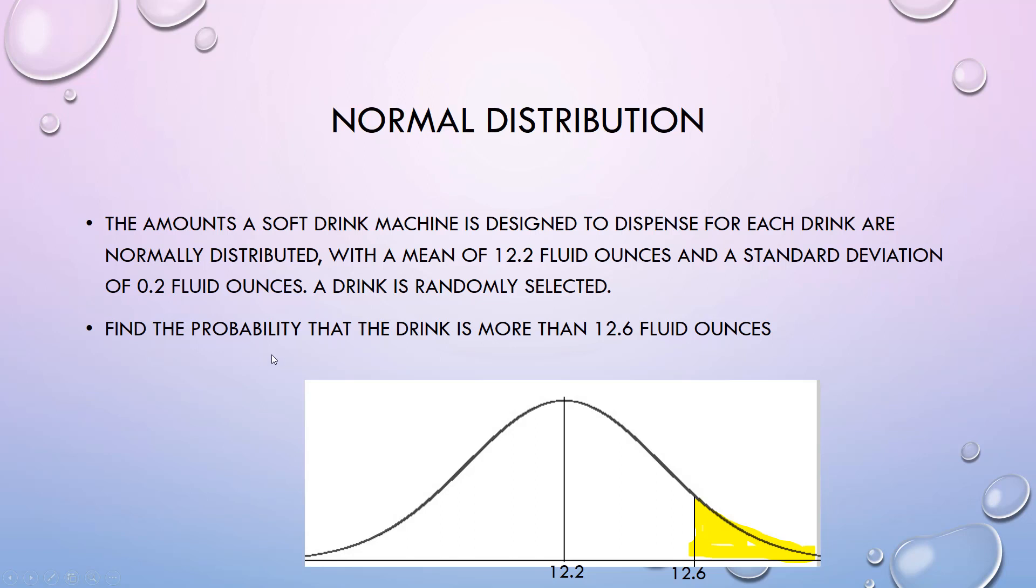Let's first look at what's the probability a drink is more than 12.6 ounces. I draw my normal curve, I put what they've given me - the population mean, 12.2 - and basically what I want to know is this area, more than 12.6 ounces.